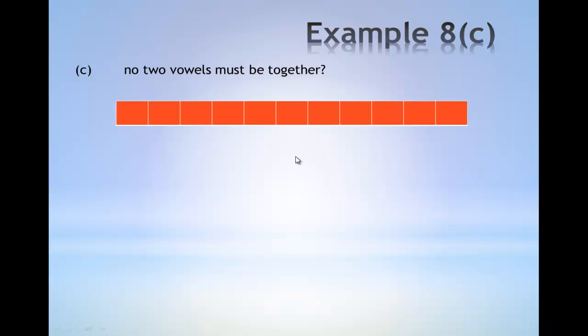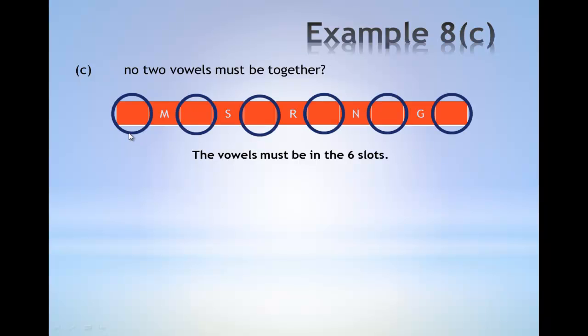The number of ways no two vowels come together. To consider this, place all the consonants in the boxes first as shown. For the vowels to not come together, the vowels must be in the six slots as shown in the blue circles.